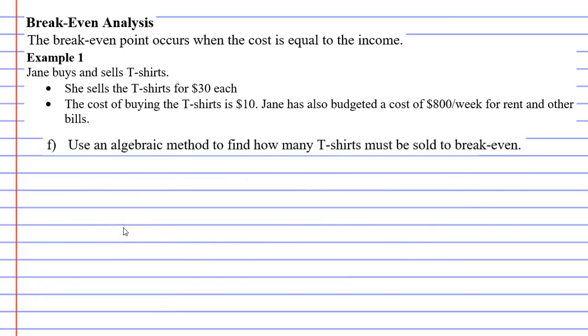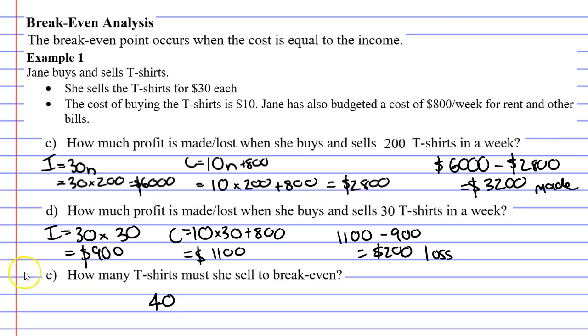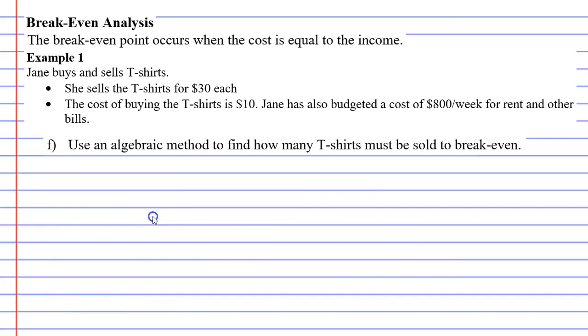Now, moving on to question F. It says, use an algebraic method to find how many t-shirts must be sold to break even. So we've already solved this in question E by looking at the graph. We're going to do this algebraically. So first of all, we'll take the two equations. Here they are here. And for it to break even, our income and cost must equal the same. So I and C must be the same. Now, if this is the case, that means that 30n must also be the same as 10n plus 800. So all we need to do is write, well, 30n would be the same as 10n plus 800 if the income and the cost were the same. So all we need to do is solve this.